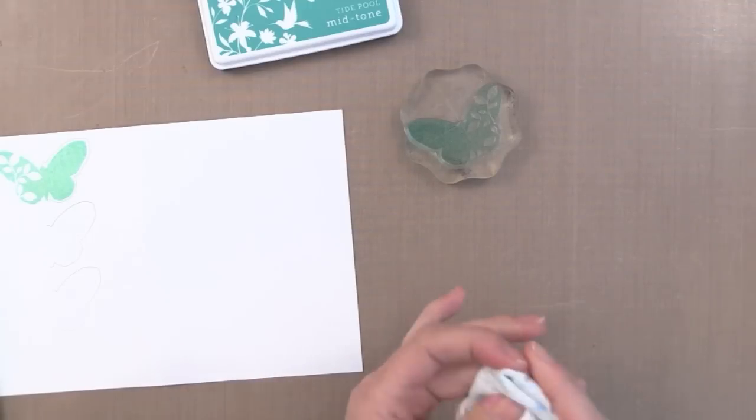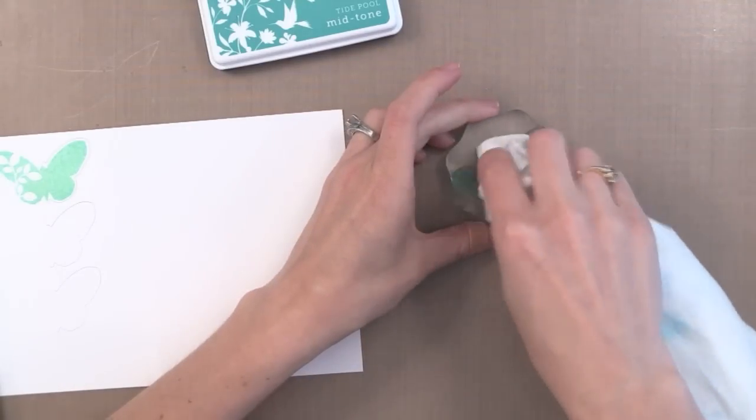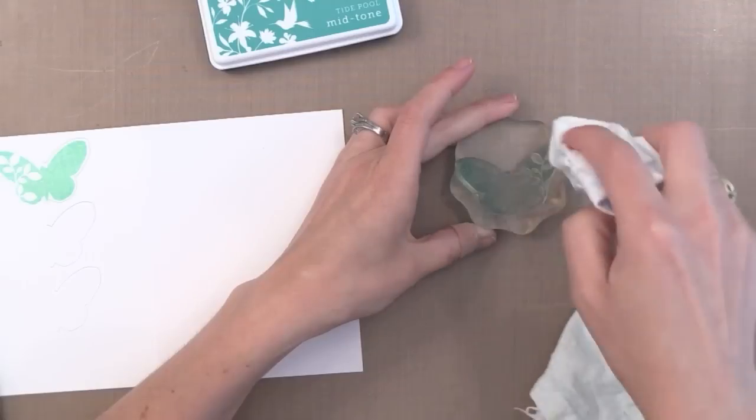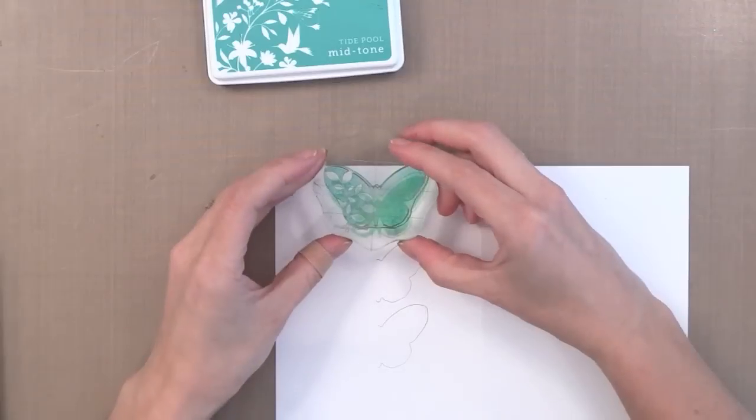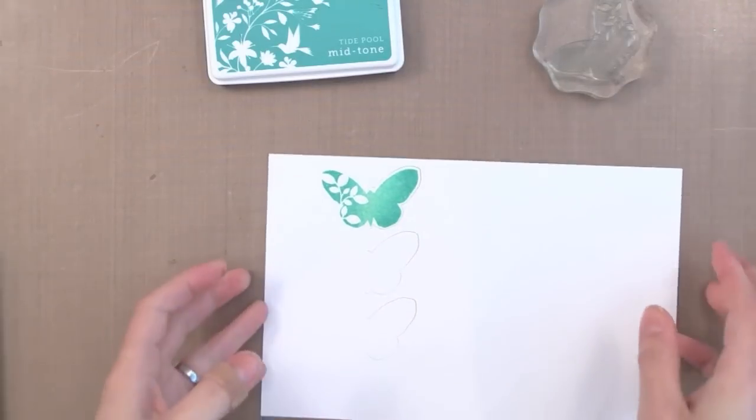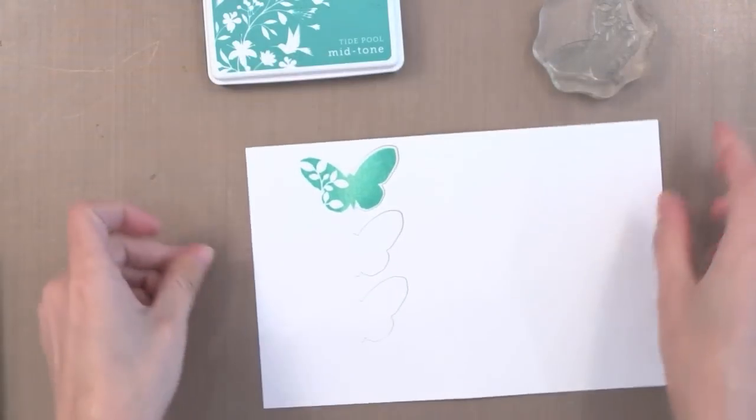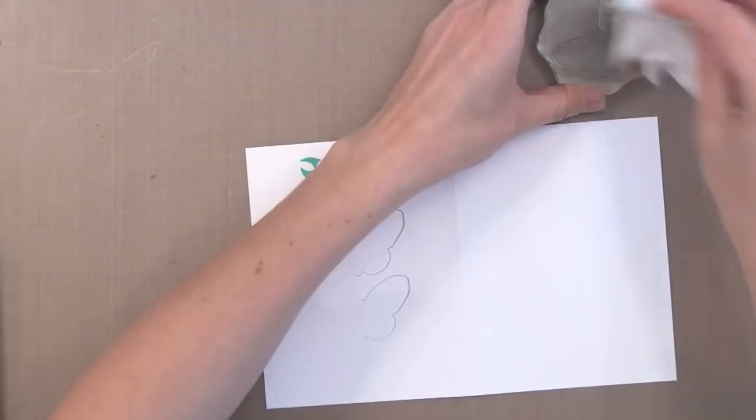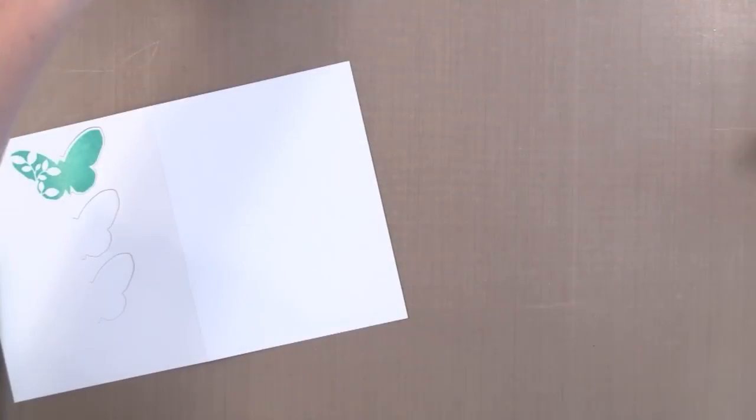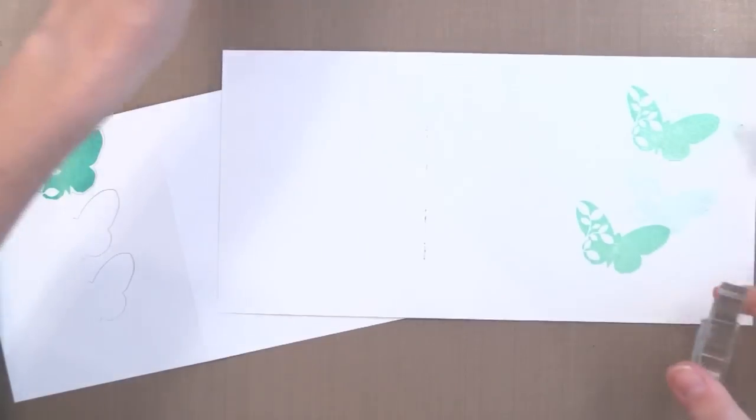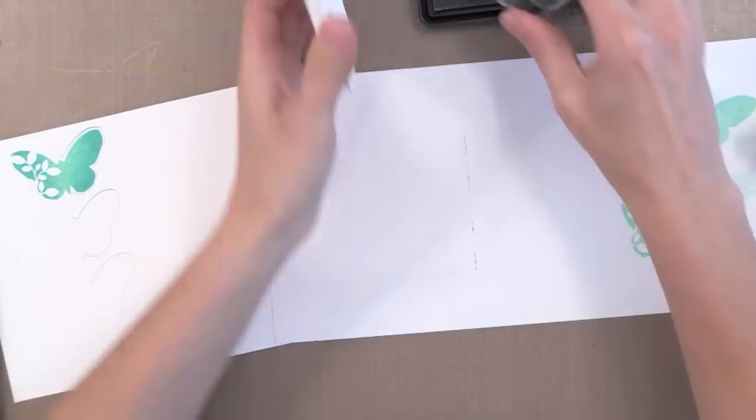Now for the darker color stamping, I've taken the Tide Pool ink and inked up my stamp. Now I have a dry cloth where I'm dabbing away some of the ink towards the center of the butterfly, so there's just ink on the outside tips. I'm going to look through the stamp and I can see perfectly to line it up and stamp it exactly on top of the first image. I end up with darker around the edges and lighter in the center. As this dries, this will even out and you'll get a nice solid image with the darker edges.